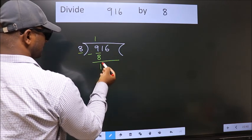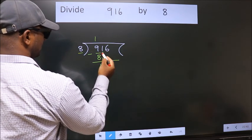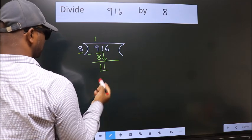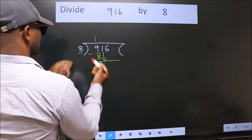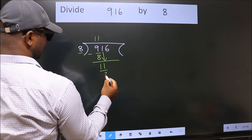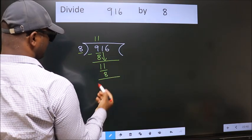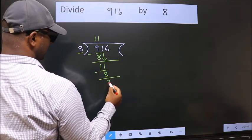After this, bring down the beside number. So 1 down. So 11. A number close to 11 in the 8 table is 8 once 8. Now we subtract. We get 3.